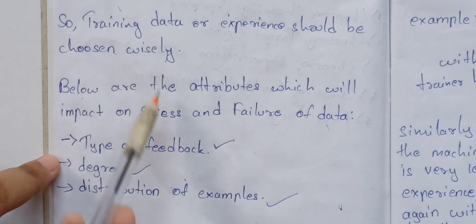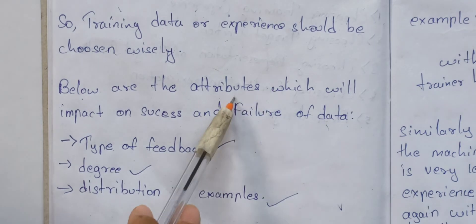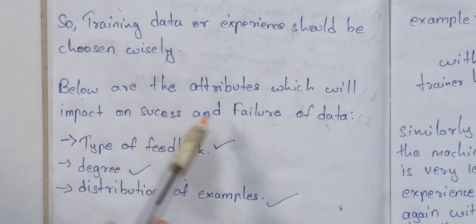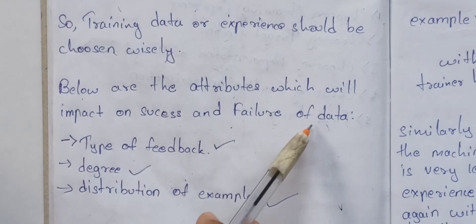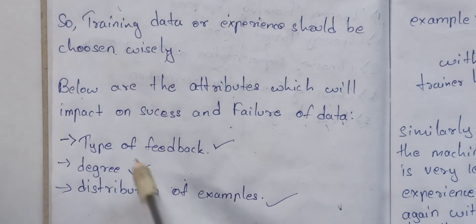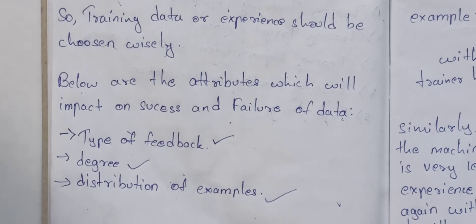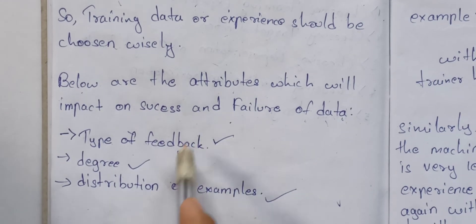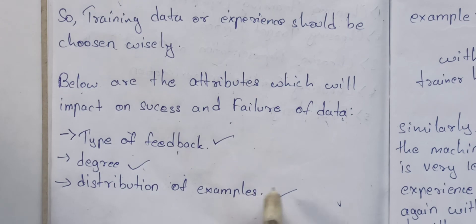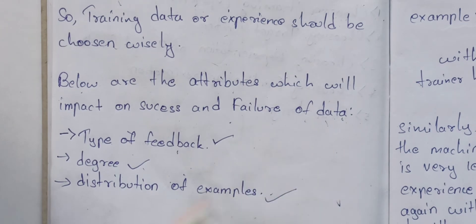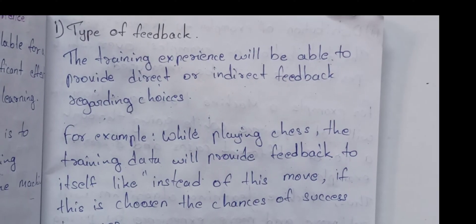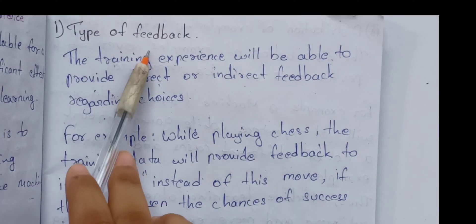Below are the attributes which will impact the success and failure of data. These three attributes are: type of feedback, degree, and distribution of examples.